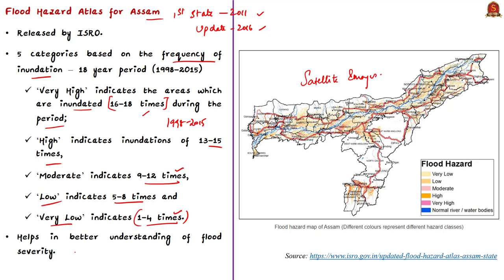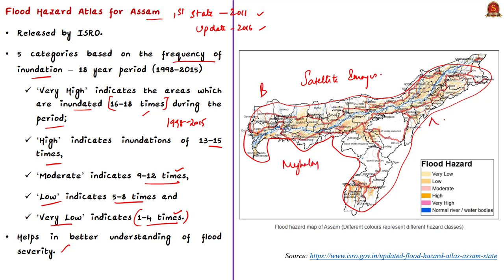Assam's geographical position plays an important role in why the state is at the receiving end of floods. Many areas are largely low-lying, and the state is surrounded by hills of Meghalaya, Bhutan, Nagaland, Manipur, and Mizoram. The challenge is that rivers flow down from these hills into the low-lying areas of Assam, which aggravates its vulnerability to frequent floods.